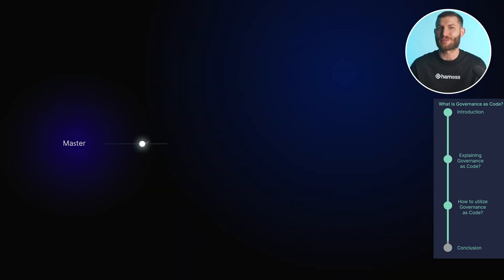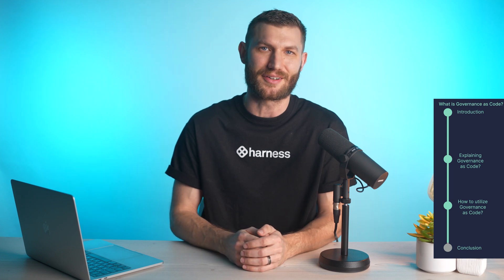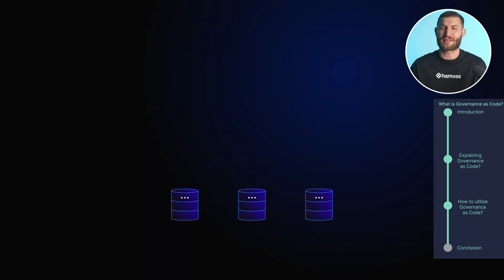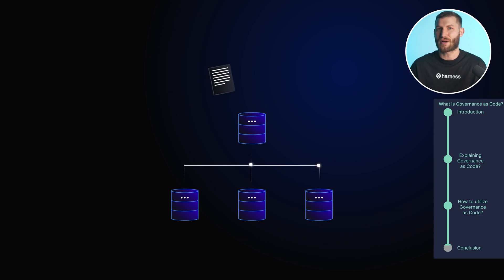With Harness, governance policies are managed just like code — they're stored in Git, which allows for easy version control and auditability. This ensures that any changes to governance policies are tracked and can be rolled back if necessary. Harness also automates progressive governance, meaning that governance policies can be rolled out gradually, similar to how feature flags work for application features, allowing you to test policies in a controlled environment before applying them to your entire system.